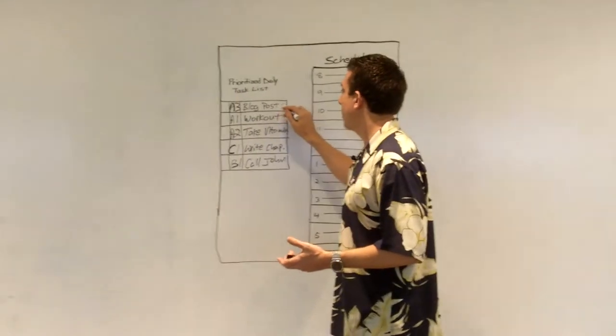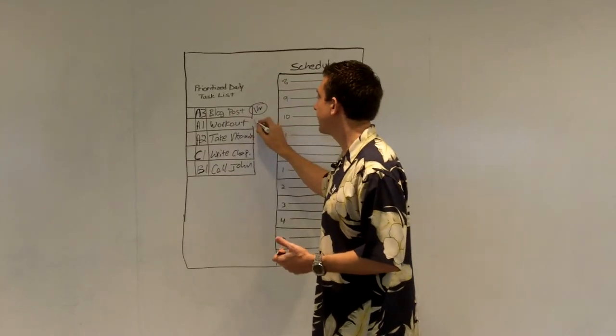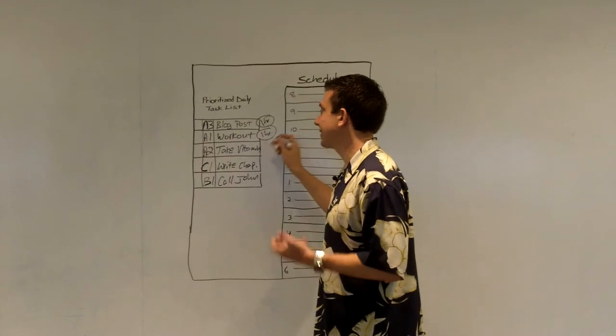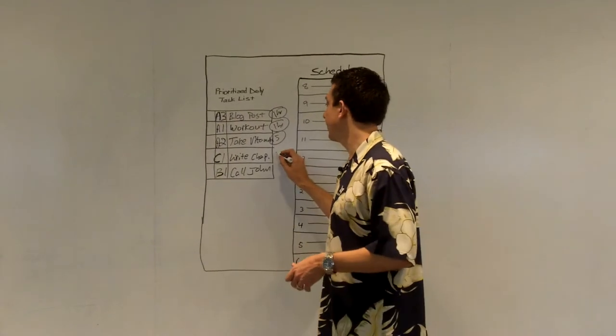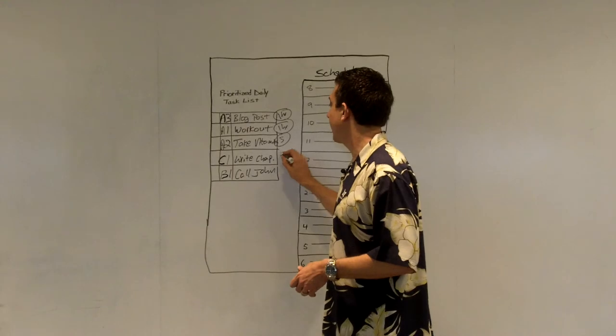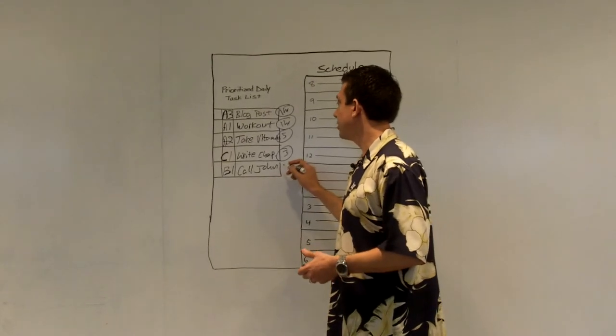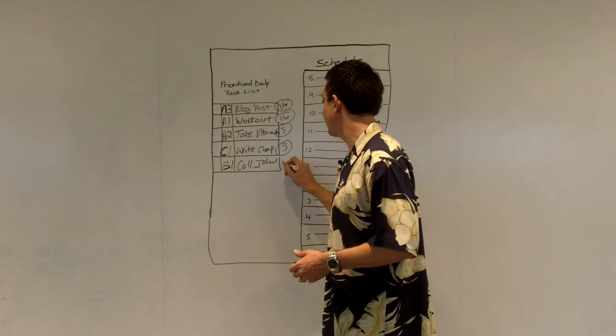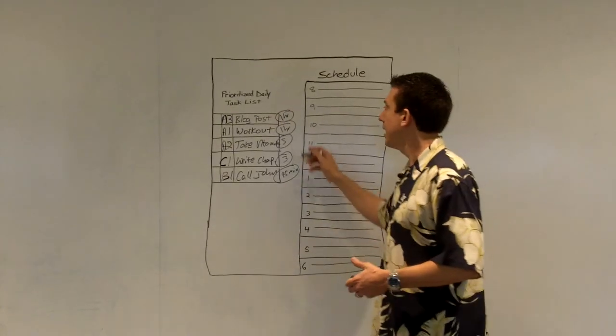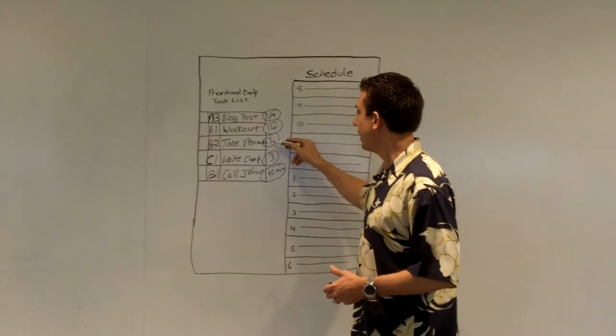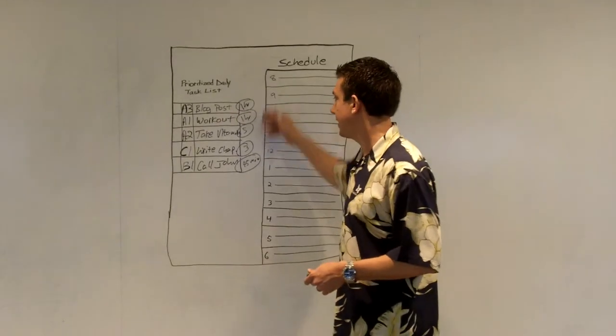The other thing that I do that helps a lot is I'll figure out how much time it's going to take. And so my blog post, I know that's going to take an hour. So I'll put one hour. Workout, that's going to take an hour. Taking my vitamins is going to take five minutes. That's real simple. Writing a chapter in my book, that's going to take maybe a good three hours just to go through that and to write even just kind of an outline, an initial piece of that. Call John, I know John talks a lot. So that may be a 45-minute call. So I'll just do 45 minutes. So I've got, then I basically go and add up all the different items. So I've got an hour, two hours, five hours, five hours and 45 minutes, five hours and 50 minutes, basically, to do all those items.